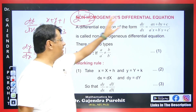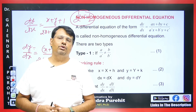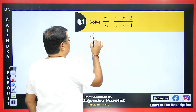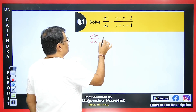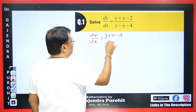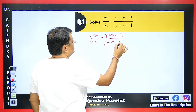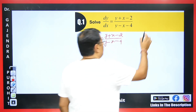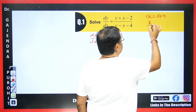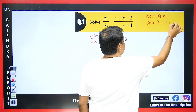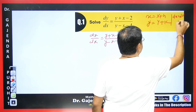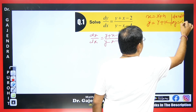Today we will discuss how to solve the equation when the ratios are not equal. Given dy/dx = (y + x - 2) / (y - x - 4), we assume small x = capital X + h and small y = capital Y + k. When we differentiate, small dx = capital dX and small dy = capital dY.